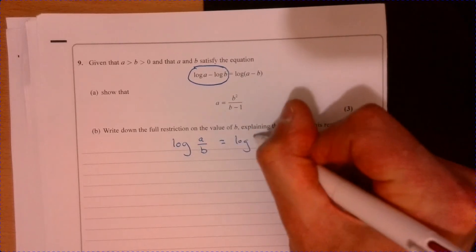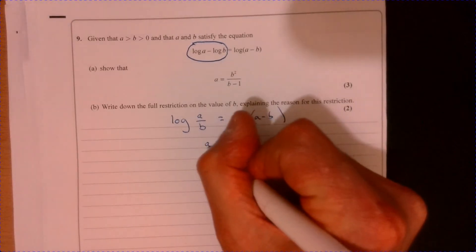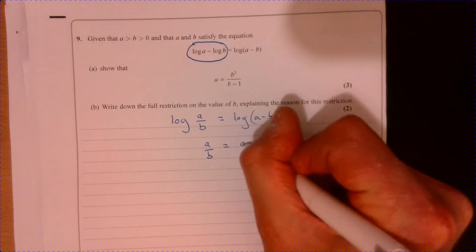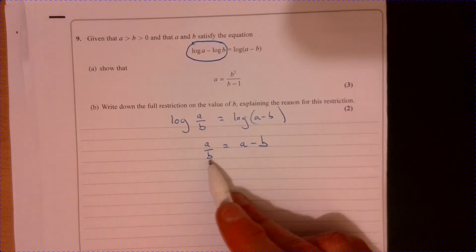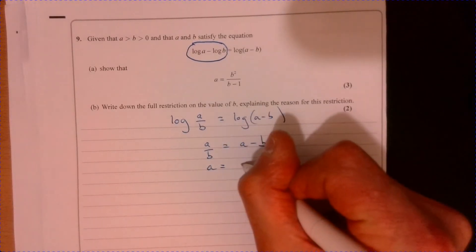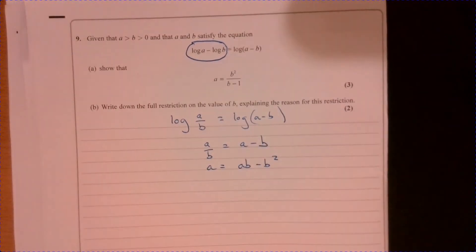So now I've got this, I can simply write A over B. I can forget about the logs effectively. And there we go. Multiply both sides by B. So A equals, that's going to be AB minus B squared.